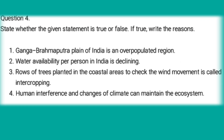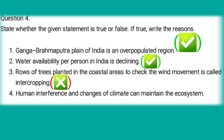Fourth question: State whether the given statements are true or false. The Ganga-Brahmaputra plains of India are overpopulated — True. Water availability per person in India is declining — True. Rows of trees planted in coastal areas to check wind movements are called shelterbelts — False. Human interference and changes in climate affect the ecosystem — False.